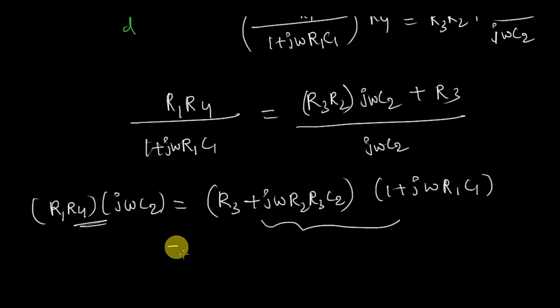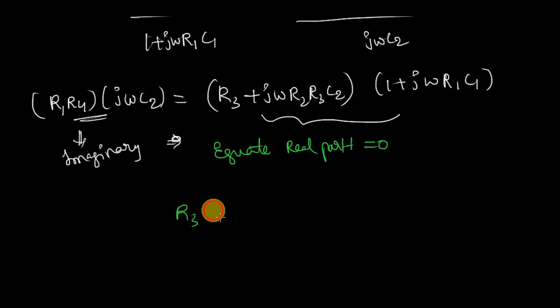As it is imaginary, what I am going to do is equate the real part to zero. So I think this is easy to do. R3 into 1, you will get R3 plus j omega into j omega, j into j, j squared, so it is minus 1 into omega squared into R2 R3 C2 into R1 C1, which is equal to zero. Now as it is minus, this side you can send to the right-hand side part. You will get plus, so R3 equal to omega squared R2 R3 C2 R1 C1. You can cancel out this R3.